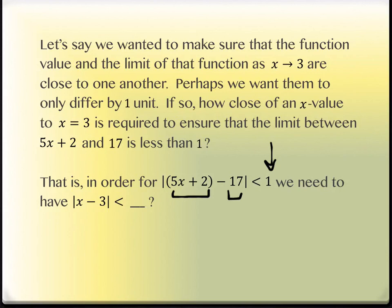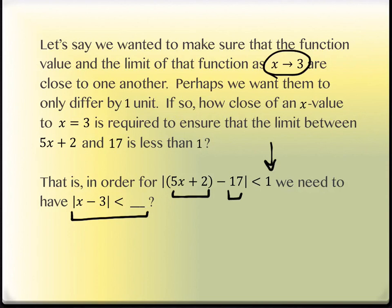We're going to solve this inequality to the point where we get absolute value of x minus 3 less than some number. We're not solving for x — we're solving for x minus 3. It's x minus 3 because the limit is as x approaches 3. If the limit were as x approaches 5, we'd want absolute value of x minus 5, and so on.